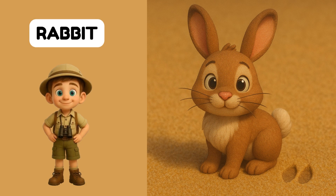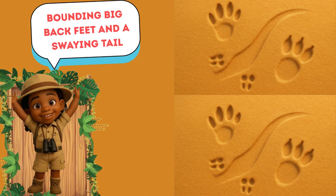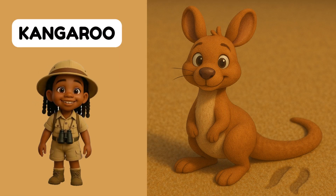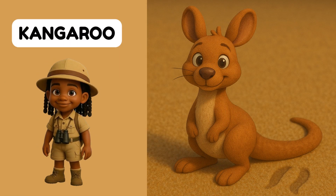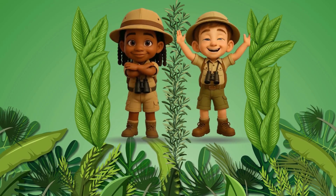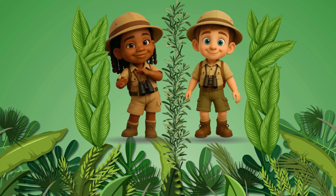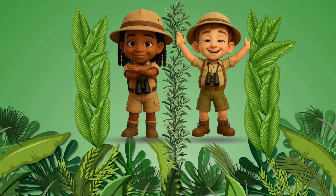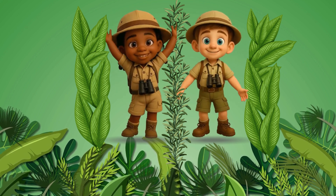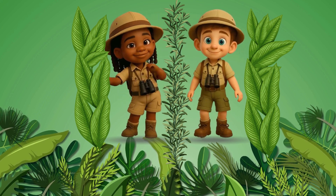Whose footprints are those? Four quick, deep, in pairs they come — that's a rabbit track. Whose footprints are those? Bounding big back feet and a swaying tail — that's a kangaroo track. All footprints, footprints, I see them in the sand. Claw to toe, from webbed toes to hoof — guess who passed by, can you name the animals yet?